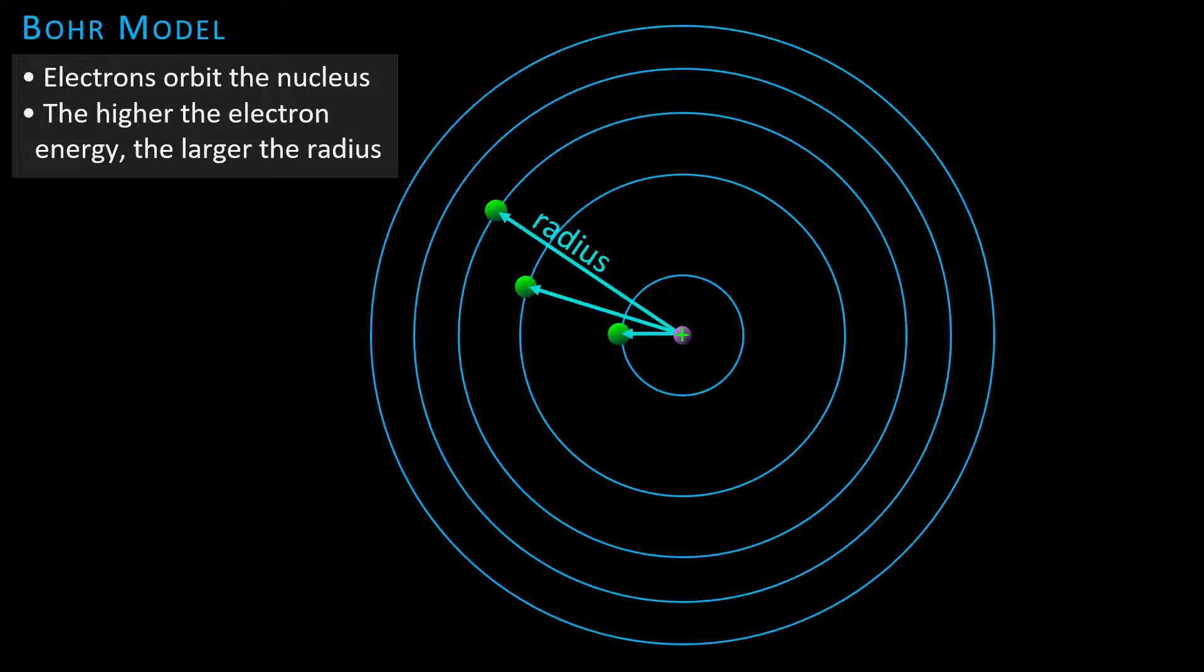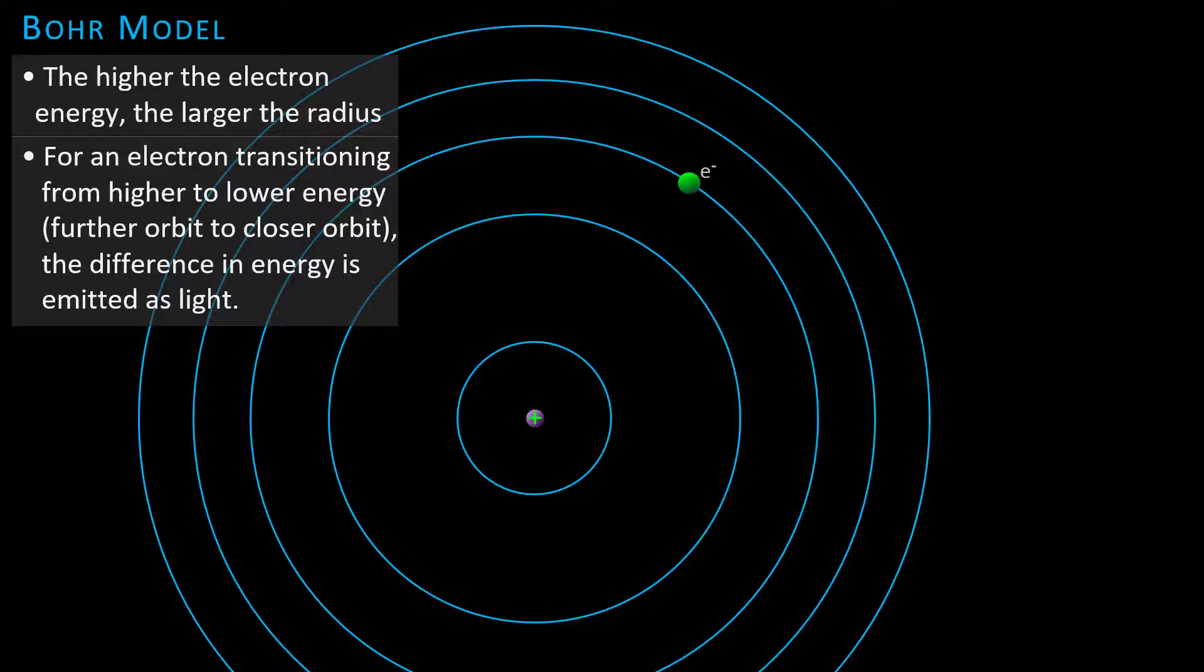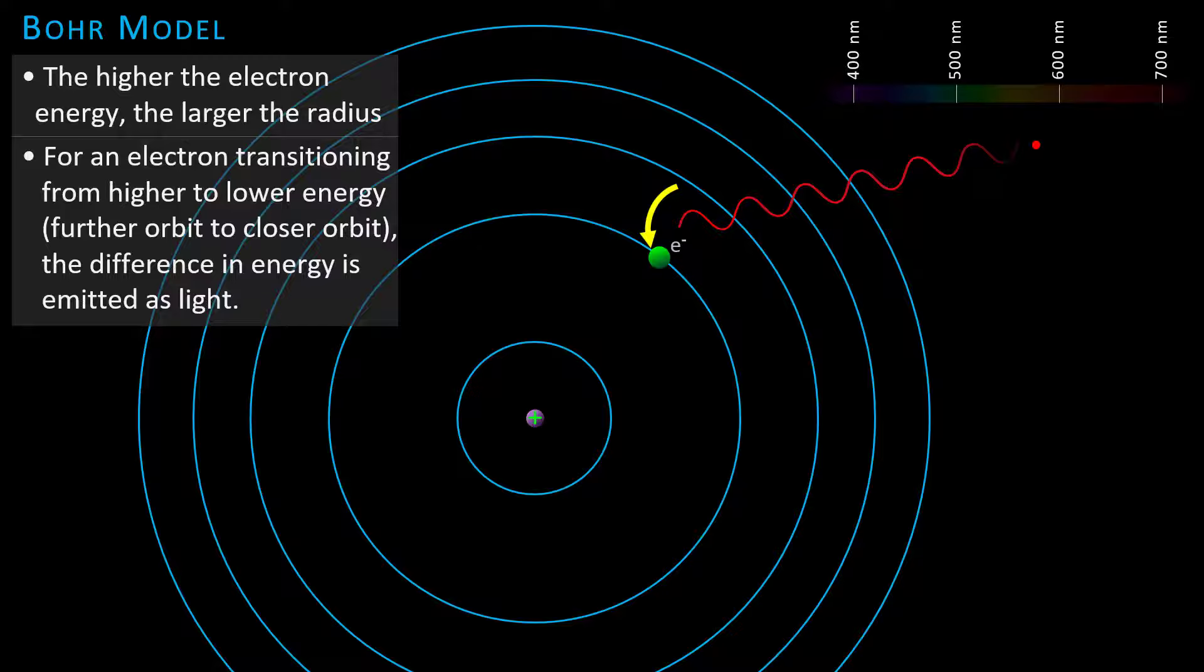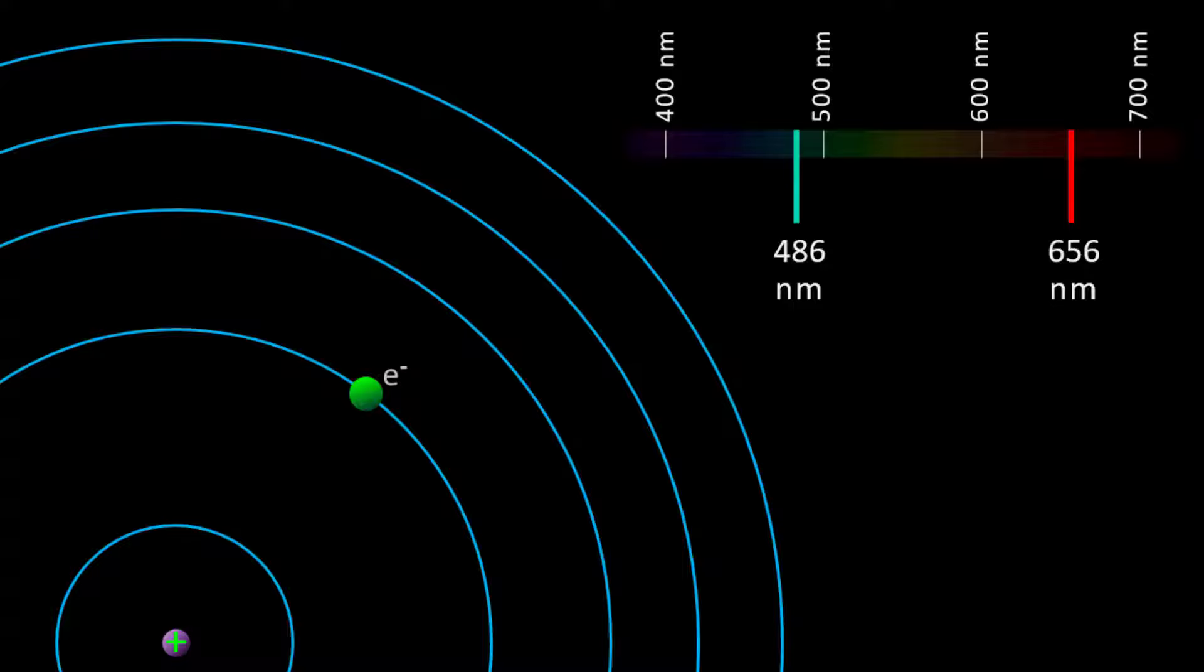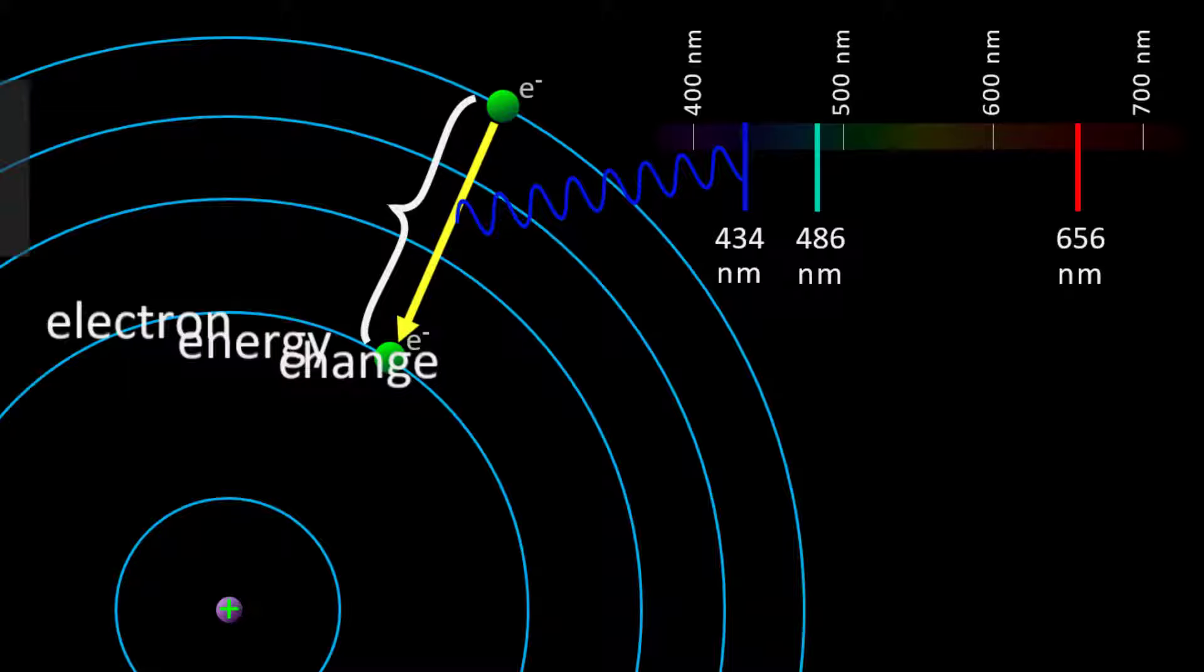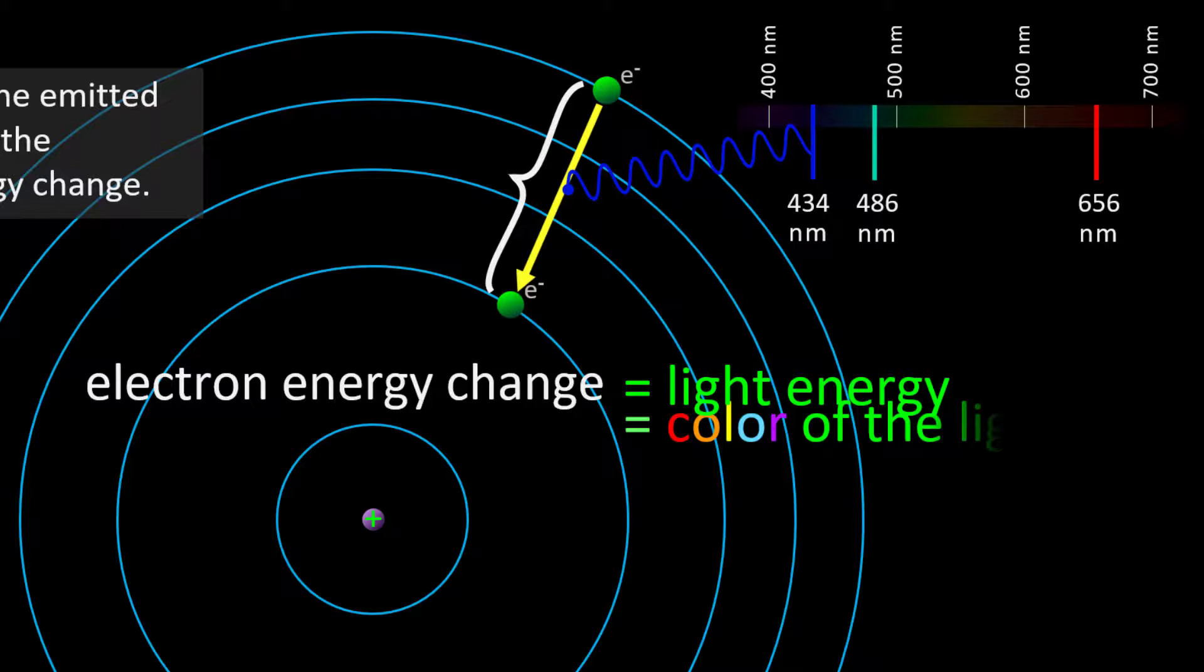In Bohr's model, for an electron transitioning from higher to lower energy, from a further orbit to a closer orbit, the difference in energy is emitted as light. A larger difference in the change of the electron energy results in higher energy light. The energy of the emitted light is equal to the electron's energy change, and those different light energies give us different colors of light.